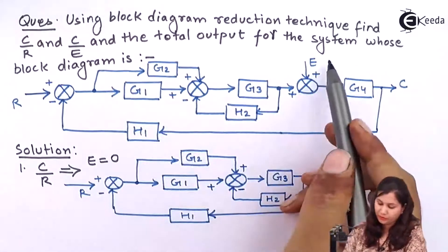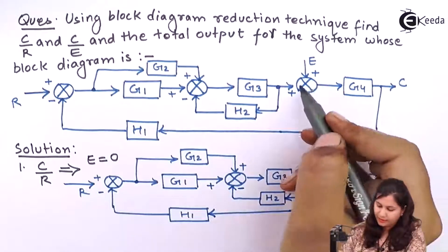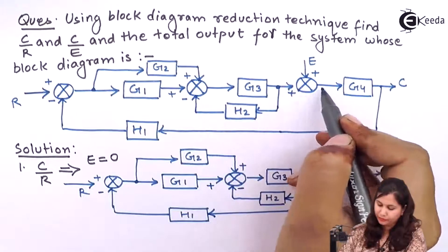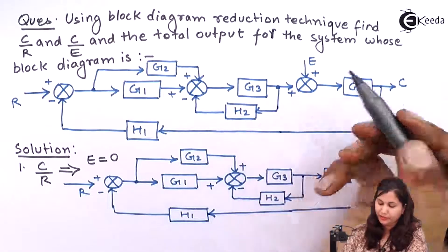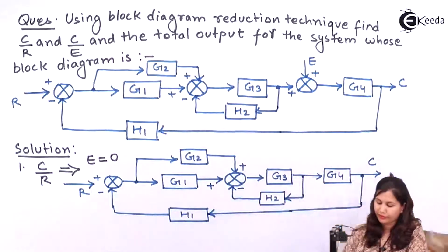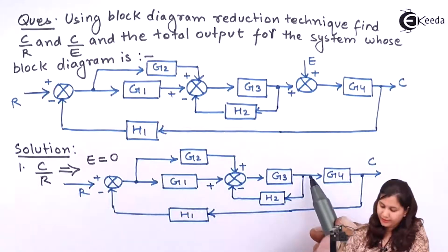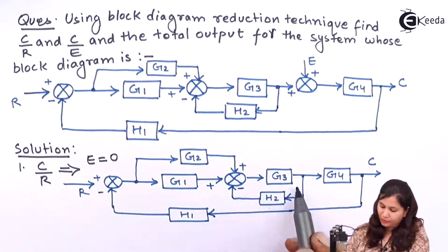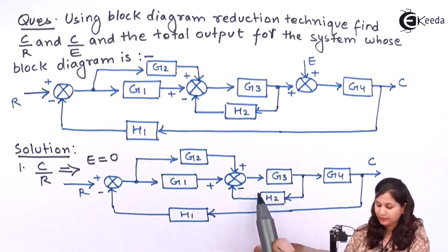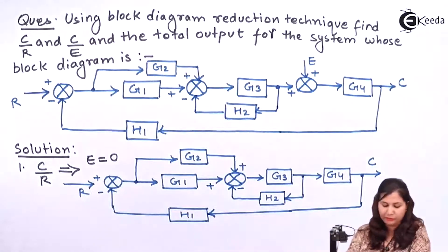We have assumed E equals to zero. So we will just have this summing point and the input — the summing point will be eliminated and the output of this block will go directly to G3. Now we can see that G3H2 is in feedback, forming a feedback loop. Let's eliminate this feedback loop by applying the feedback rule.